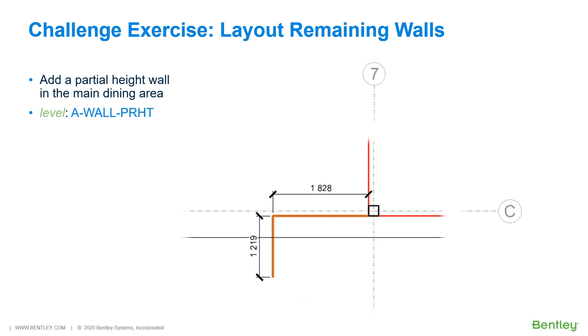As shown here, you will add a single line partial height wall in the main dining area. Use the level A wall partial height to construct this.